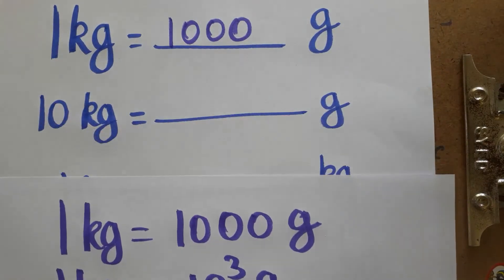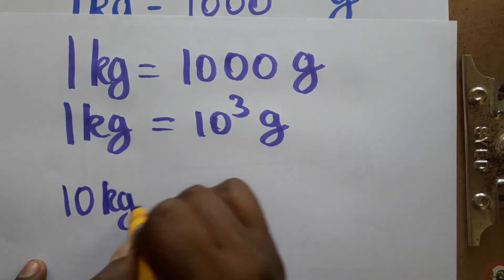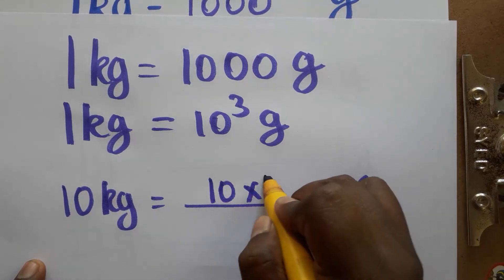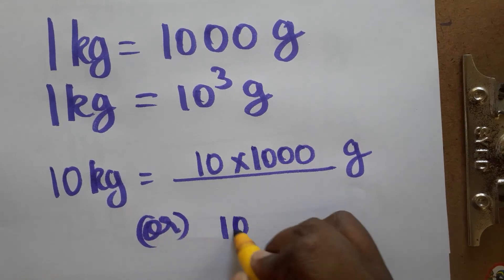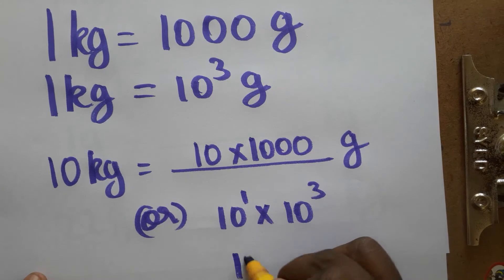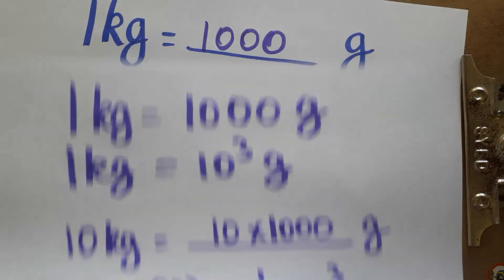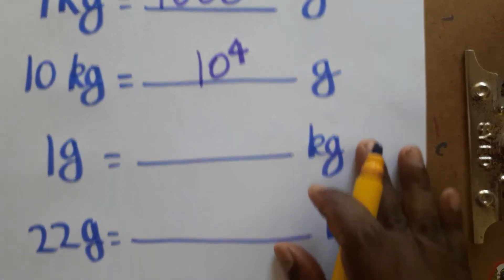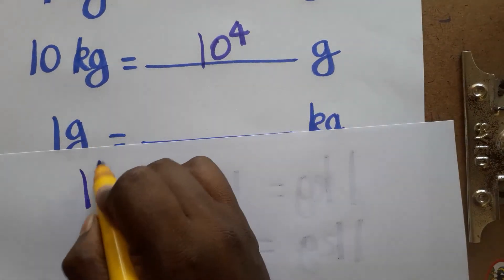Next: 10 kg is equal to how many grams? We calculate 10 into 1000, which gives 10,000. We can also write it as 10 into 10 power 3, which equals 10 power 4 grams. So 10 kg is equal to 10 power 4 grams.